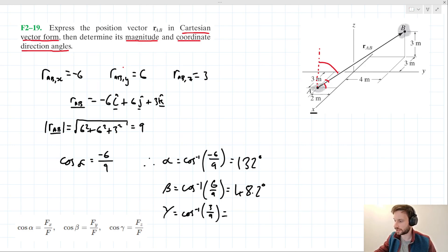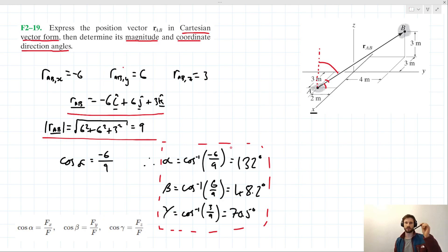When we put that in our calculator, that gives us a value of 70.5 degrees. So it looks like we have our Cartesian form, we have our magnitude, and we have our coordinate direction angles. If you have any questions or comments about that problem, please feel free to leave them in the comment section below. Otherwise, thank you very much for watching.